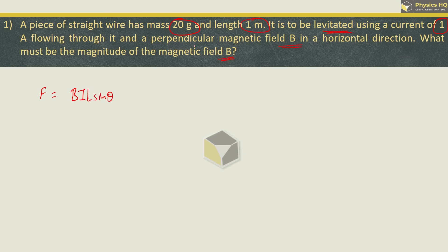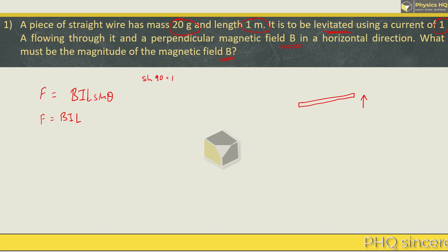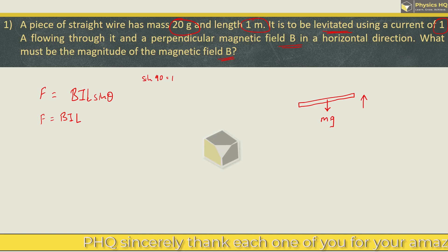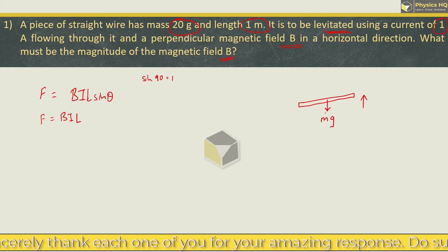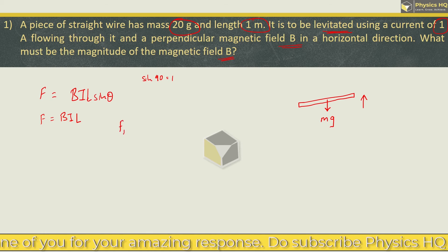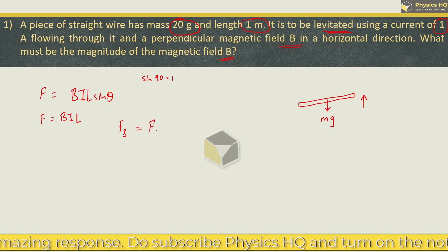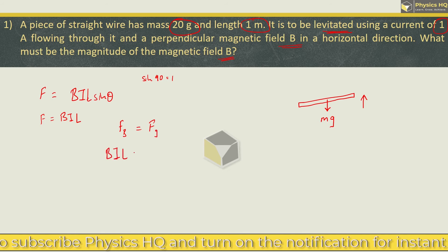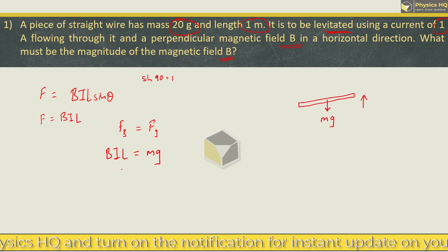The current flowing through the rod and the magnetic field is perpendicular, so the angle is 90°, and sin 90° is 1. The force that the rod is experiencing for getting levitated is given by the formula F = BIL. Since the rod is levitated, the upward force and the downward force are balanced — the force due to the magnetic field equals the gravitational force. So we can write BIL = Mg.